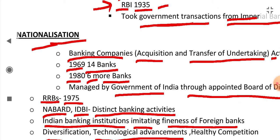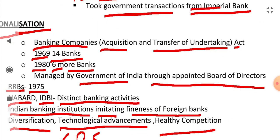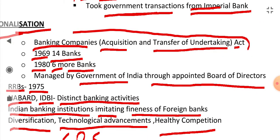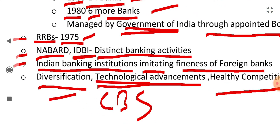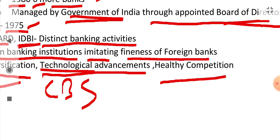The next major development was the nationalization of banking companies into nationalized banks, done through the Banking Companies Acquisition and Transfer of Undertaking Act. In 1969, 14 banks were nationalized, and in 1980, six more were nationalized. They are managed by the Government of India by appointing a Board of Directors. Regional Rural Banks (RRBs) were established in 1975 for banking services in rural areas. Banks like NABARD and IDBI were established for the promotion and development of agriculture and industries. Indian banking institutions are matching the fineness of foreign banks, with enough diversification, technological advancement, and healthy competition.